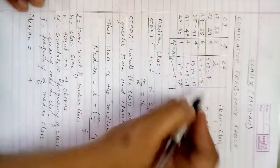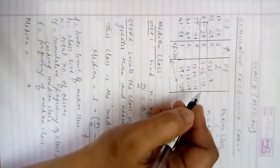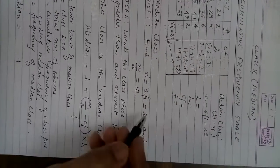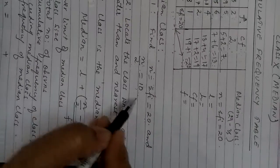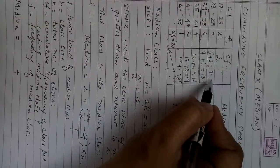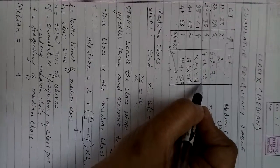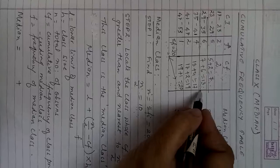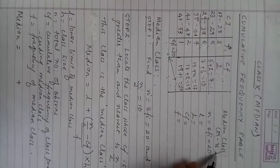The median class is 29 to 35. Writing the median class carries marks, so be sure to include it in your answer sheet. To summarize: find the total frequency (20), divide by 2 to get 10, go to the CF column, and select the CF that is nearest to and greater than n/2. That corresponding class interval — 29 to 35 — is your median class.